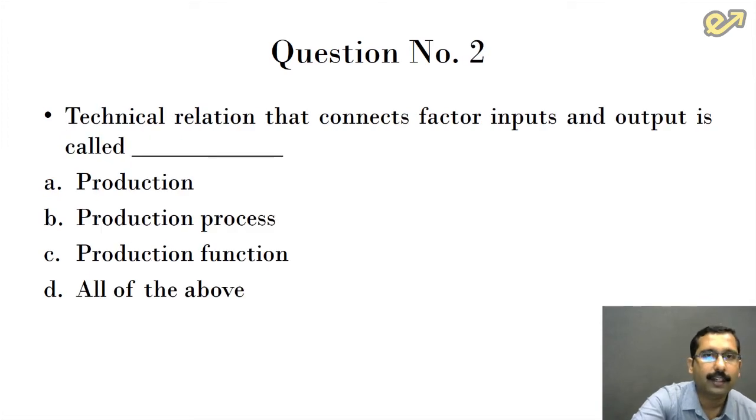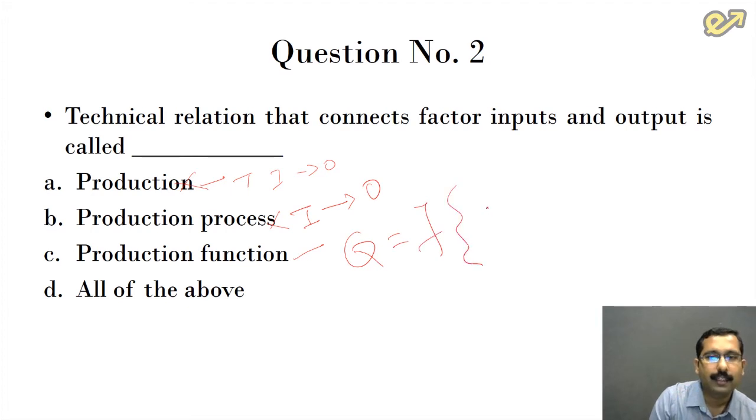Technical relationship that connects factor inputs and output is called dash. Production is not the answer because production is a process of transforming inputs to output. Production process refers to the steps involved in converting input to output, so that's not the answer either. Production function is a mathematical equation which relates the function of capital and labor with the output. So the answer is option C, production function.